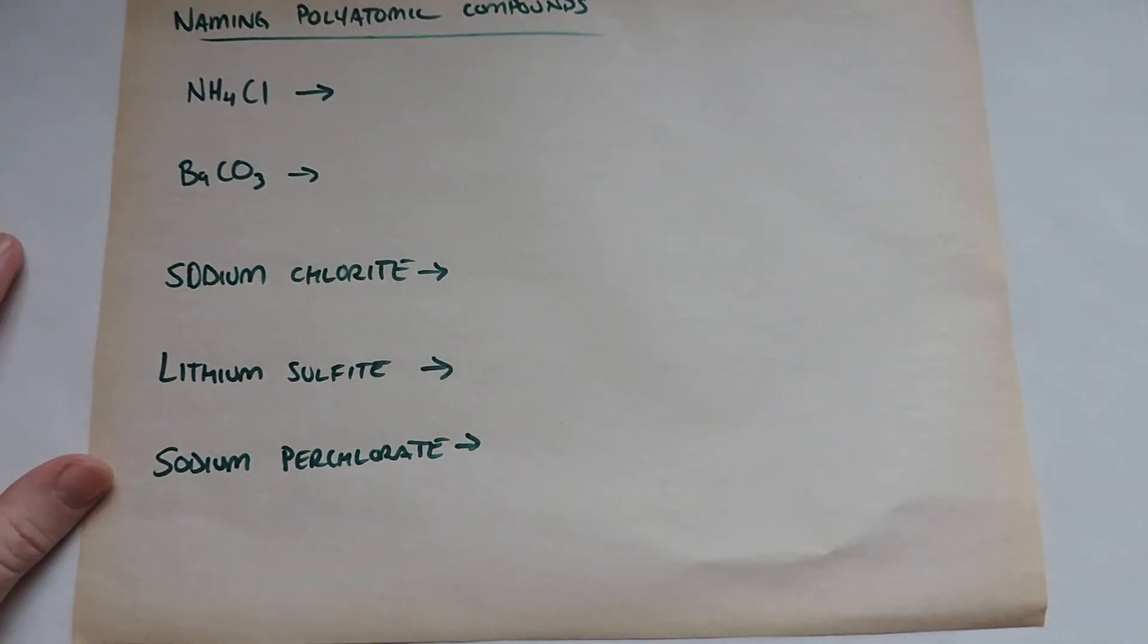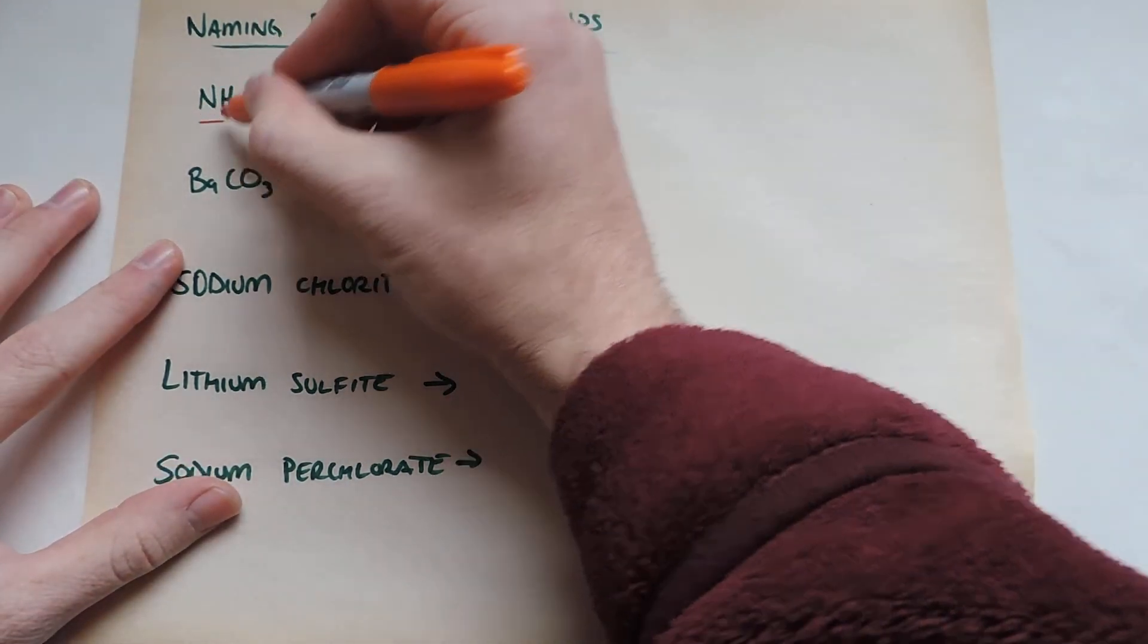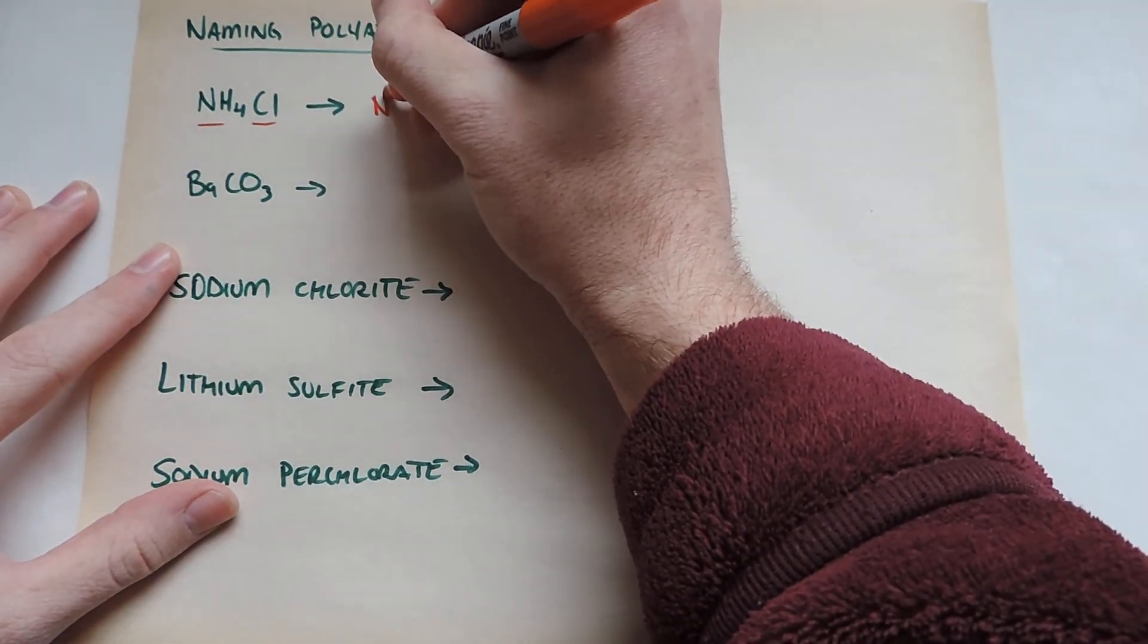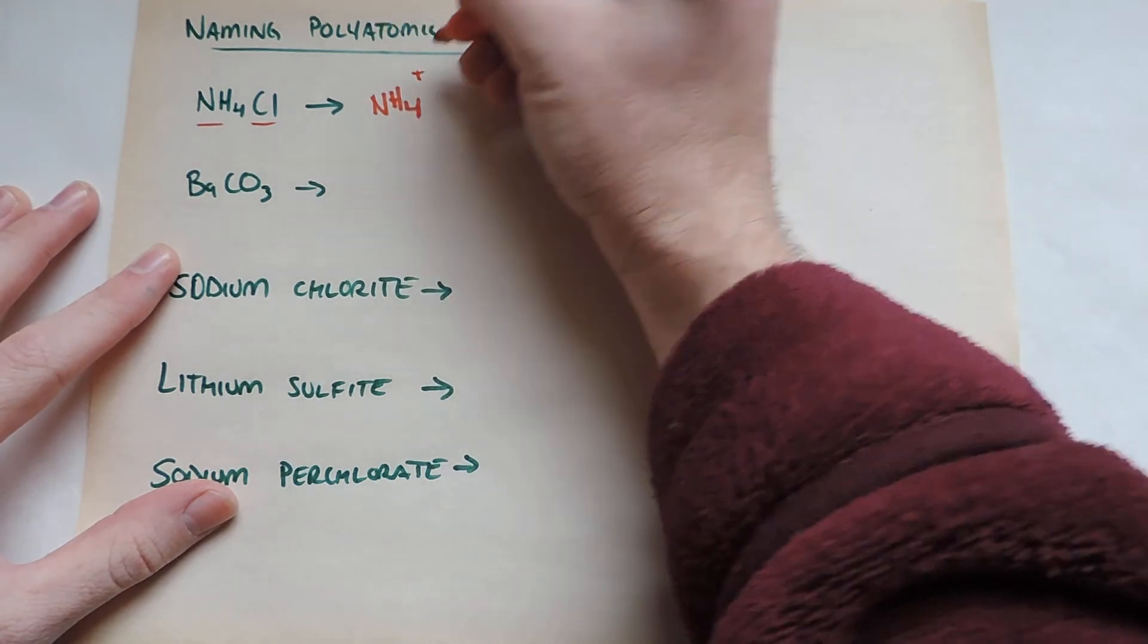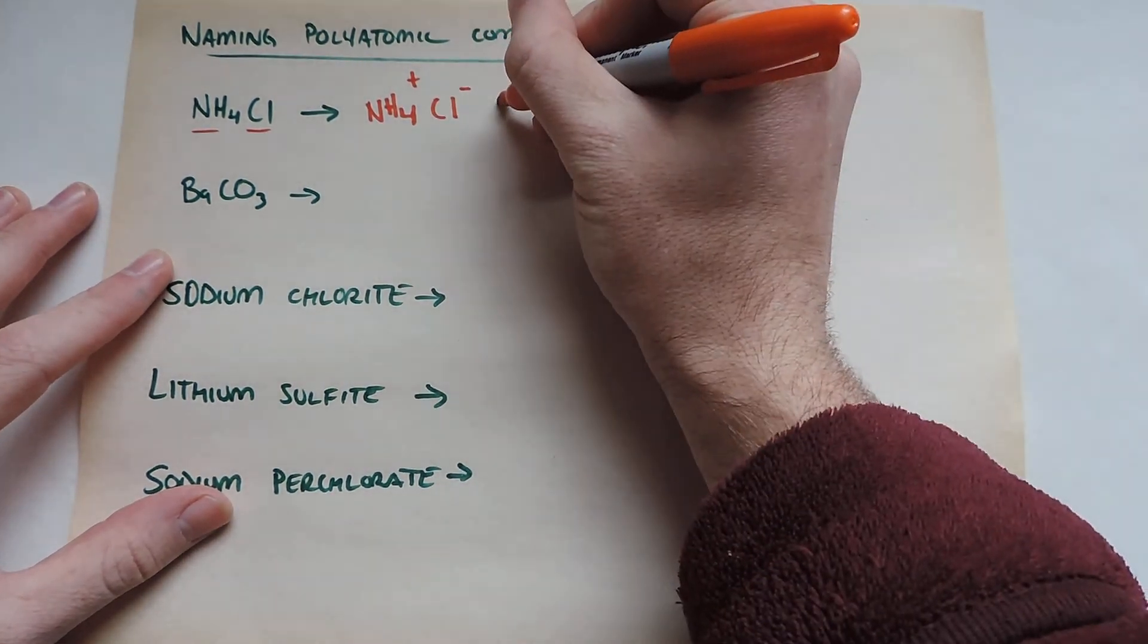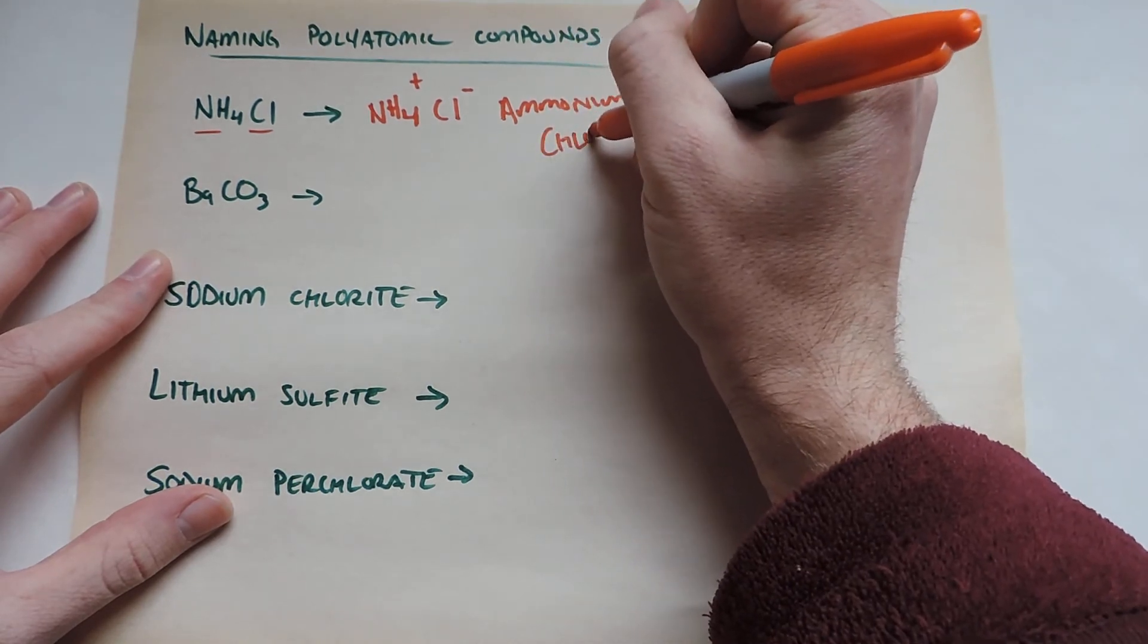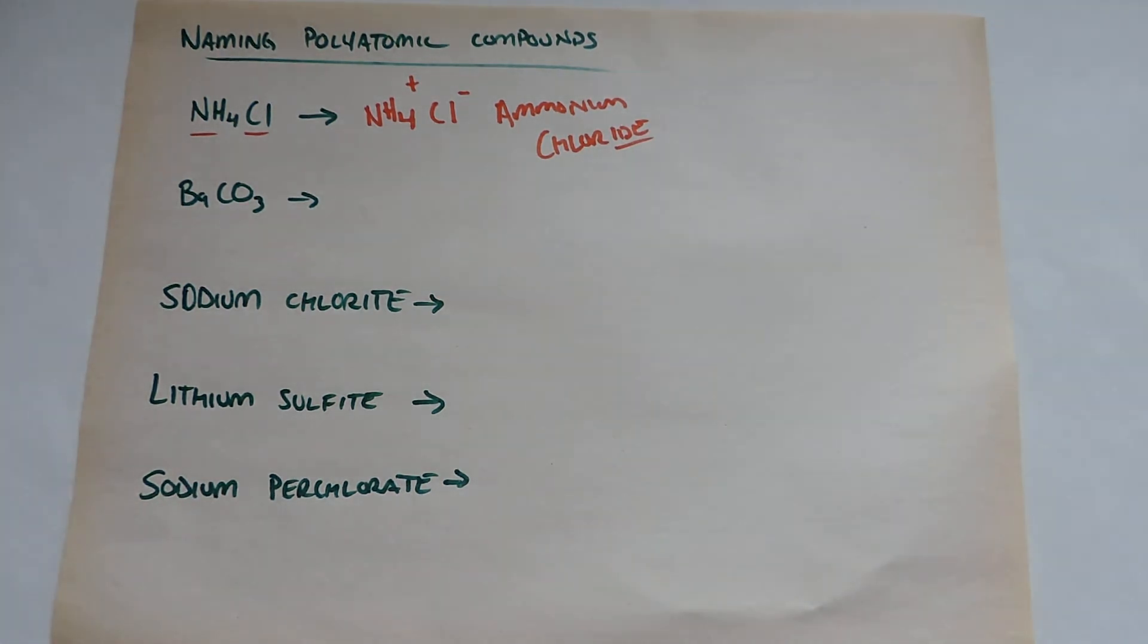So anyways, naming them is very easy. You just have to pay attention to what you're doing. So now you see that ammonium is going to be a plus one. And then we know chlorine is a minus one. So we're going to have ammonium chloride, and the reason we have chloride is because this is basically functioning like your standard metal, non-metal compound, though it's not.